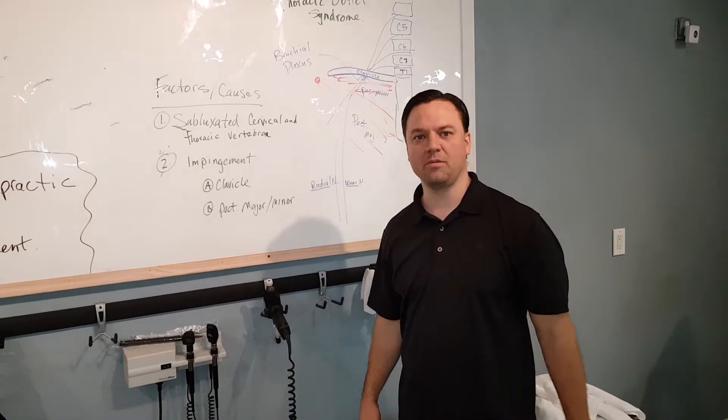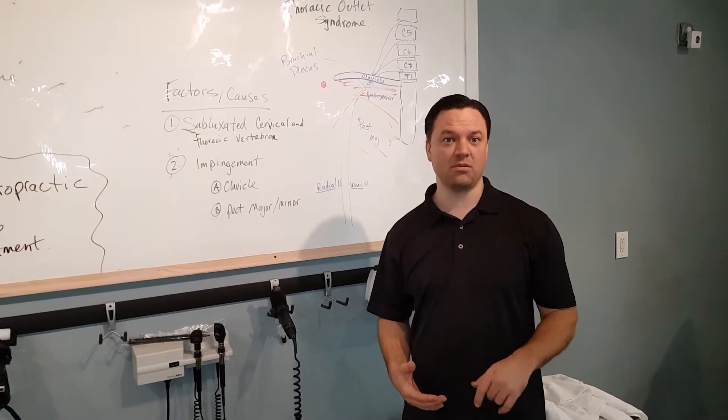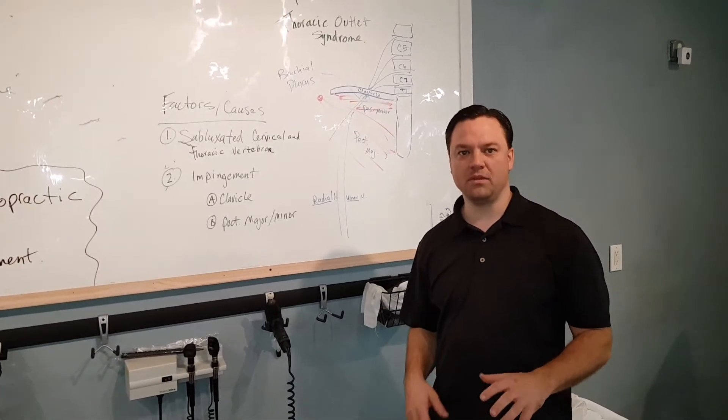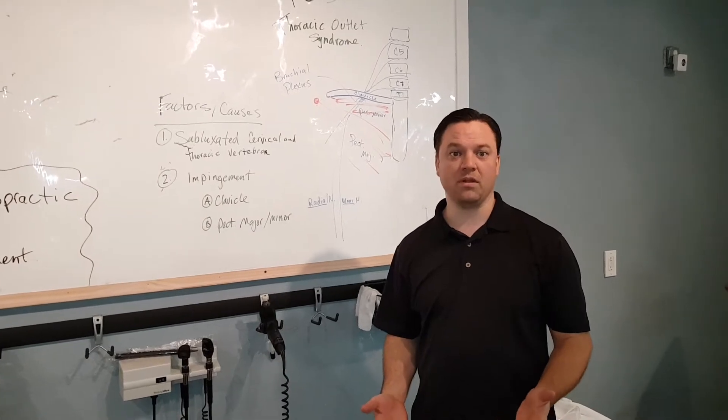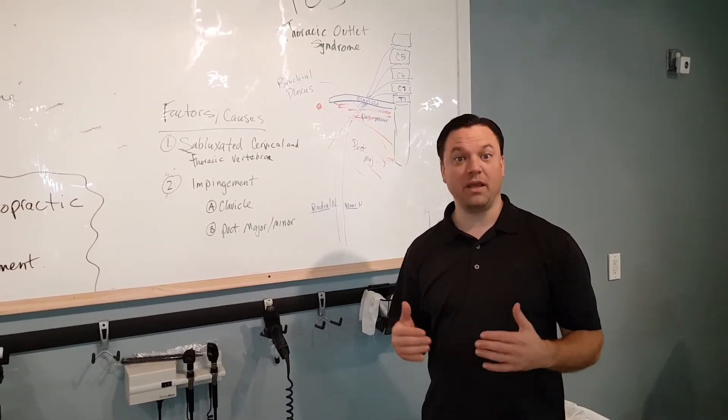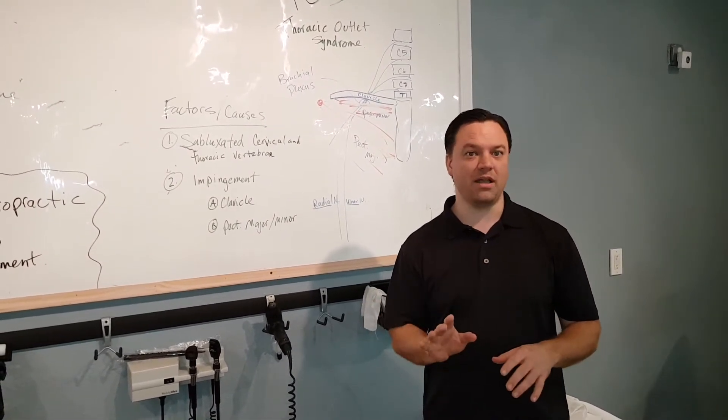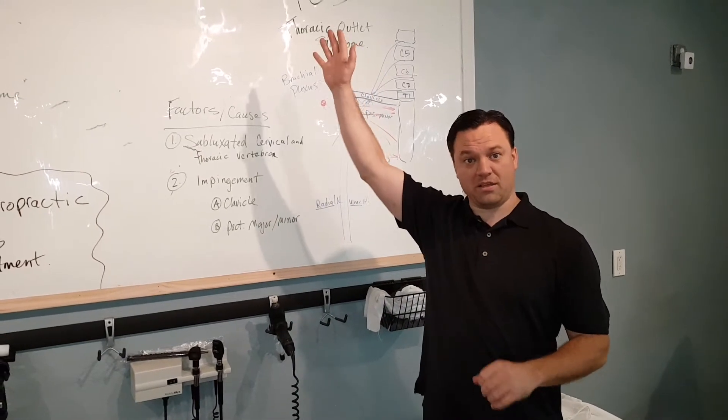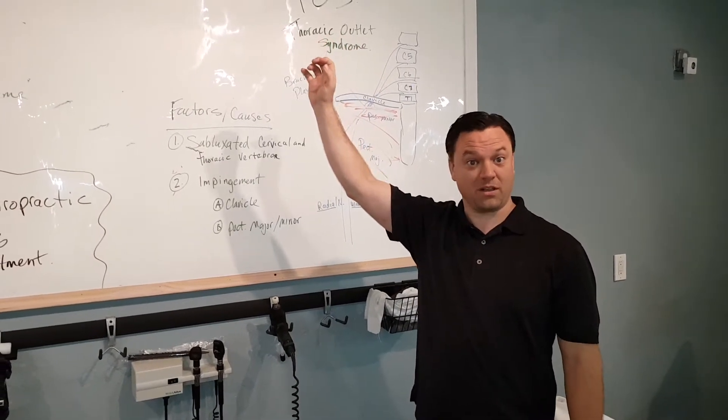Alright guys, welcome back. We're going to talk a little bit about thoracic outlet syndrome, or TOS. This does affect quite a few people. One of the big major red flags is if you raise your arm up like this, it starts to go numb pretty quickly. That's a big red flag that you probably have thoracic outlet syndrome.